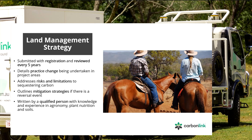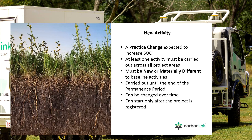The land management strategy is reviewed every five years. The details of your practice change must be recorded and evidence provided to auditors — this could be date- and location-stamped photographs, receipts for seed, fencing material, and so on. The land management strategy must address the risks associated with the project and outline mitigation strategies. It must be drafted by a qualified person — CarbonLink and RCS are writing those for quite a few people at the moment. Your new activity must be a practice that will increase soil organic carbon, and you must carry out at least one activity across all project areas. It must be new or materially different and carried out until the end of the permanence period.